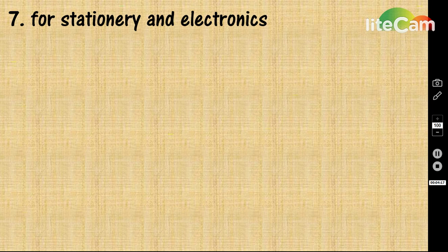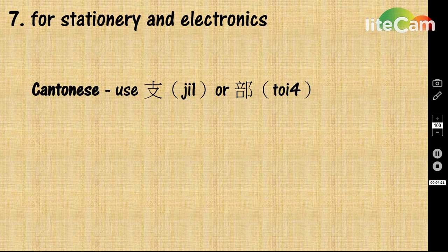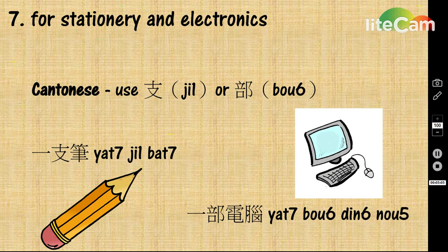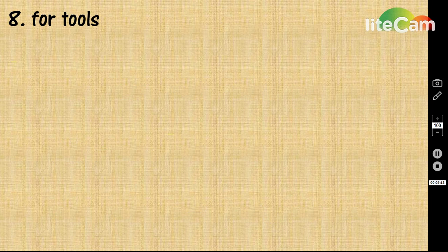For stationery and electronics, 枝 or 部 is used. For example, 一枝筆 means a pen or a pencil. 一部電腦 means a computer.